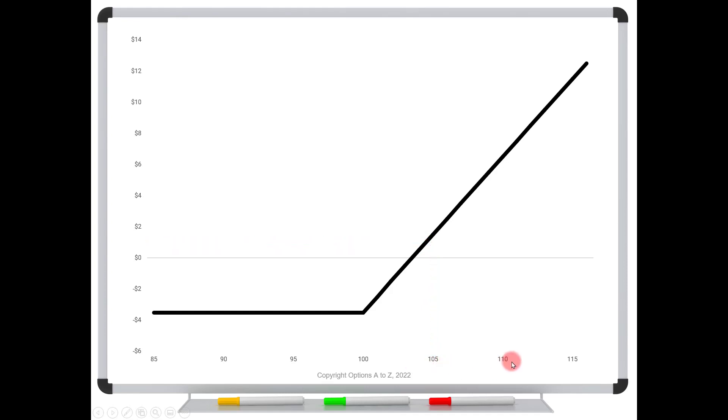What if the stock is up here at $110 at expiration? Same idea. Just trace a line up to the black line, look left, and it's lining up at $650. Why? Because with the stock at $110, the $100 call is worth $10. You paid $350 and therefore you have a $650 profit.